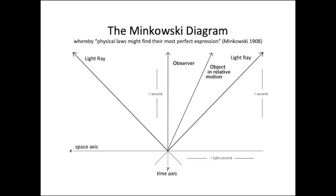Any relative motion other than that of light, being slower than light, will follow a world-line inside the future light cone, as with the object in relative motion shown here.